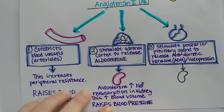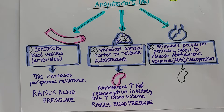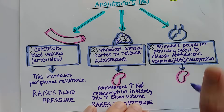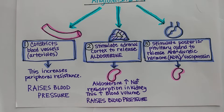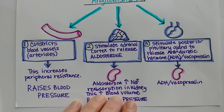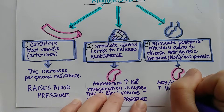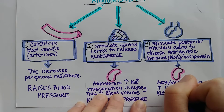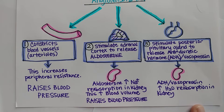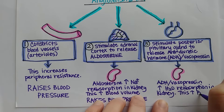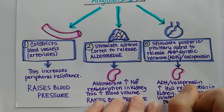Angiotensin 2 is one of the most powerful hormones to raise blood pressure for these reasons. Vasopressin, or antidiuretic hormone — they are the same hormone with two different names — will increase water reabsorption at the kidney. So instead of retaining more salt and water following salt the way aldosterone does it, this is a direct way to raise blood volume. This increases blood volume and raises blood pressure.